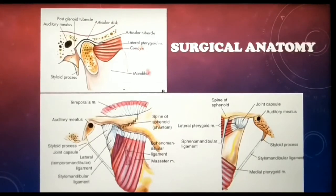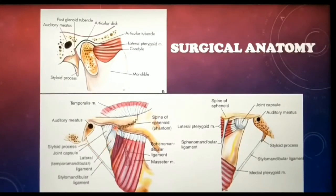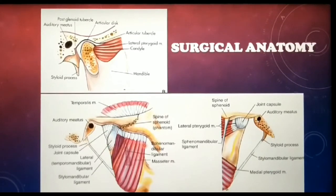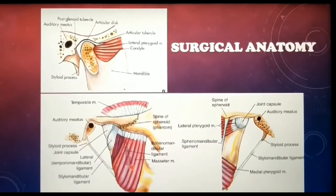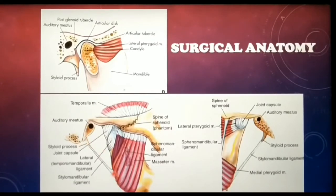The different capsular and ligament attachments include the fibrous capsule, which covers the entire joint. The temporomandibular or lateral ligament extends from the zygomatic process to the lateral aspect of the condylar head. The sphenomandibular ligament is an accessory ligament that extends from the sphenoid spine to the tip of the lingula on the medial aspect of the ramus. The stylomandibular ligament extends from the styloid process to the posterior border of the ramus at the angle region.